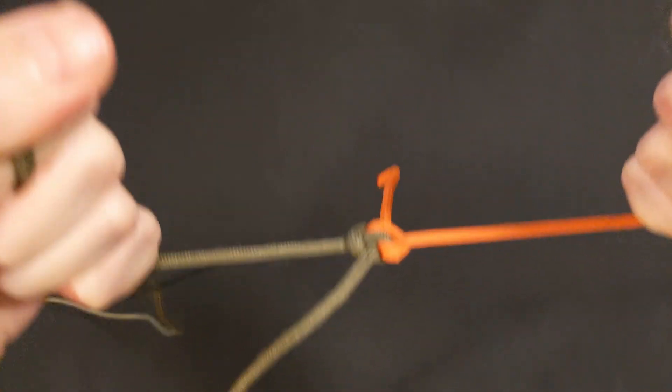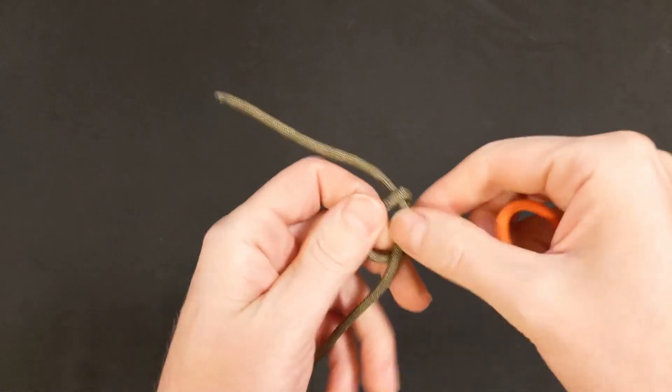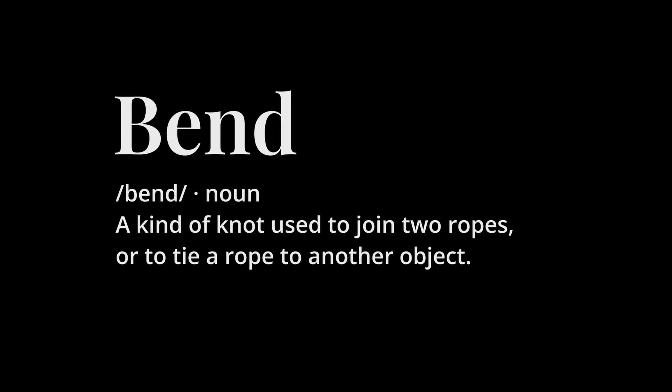It's highly secure and easy to untie even after it's been heavily loaded. For those unfamiliar with the terminology, a bend in the context of knots is just a knot that joins two ropes.